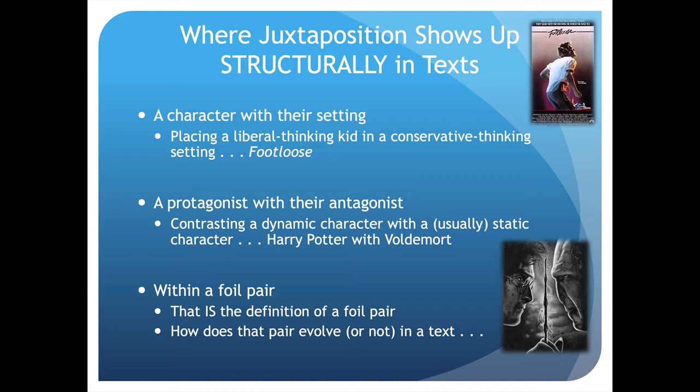Another way juxtaposition comes up is with a protagonist being juxtaposed with the antagonist. We need a hero on the hero's journey, and that hero can be juxtaposed with the challenges they are facing. The third way we typically see juxtaposition is in the idea of a foil pair. A foil pair could be a protagonist with an antagonist, but oftentimes foil pairs are characters who start out at odds, don't see the world the same way, and then evolve to like each other and learn from each other. For example, Harry Potter and Voldemort, or Harry Potter and Hermione.